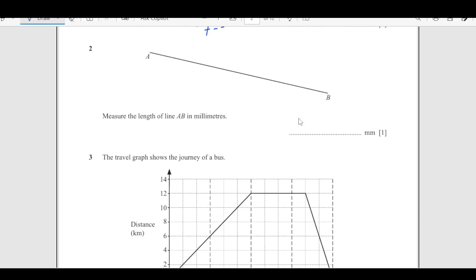Number 2: measure the length of line AB in millimeters. Just put your ruler and measure from A to B. I have measured this one. This comes out to be 107 millimeters, that is 10.7.